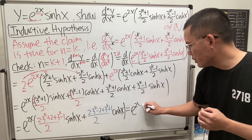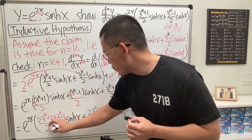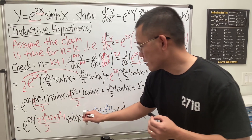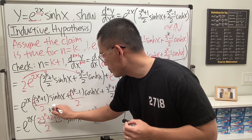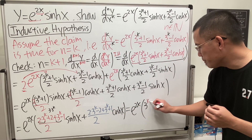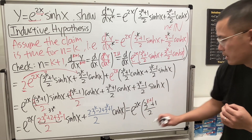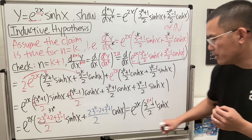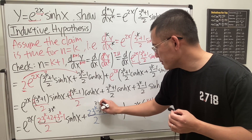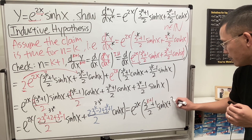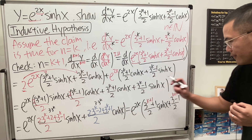Simplifying the sinh coefficient: 2 minus 1 is minus 1 in the exponent, and 2 times 3 to the k is 3 times 3 to the k which is 3 to the k+1, so together we get 3 to the (k+1)/2 plus 1 over 2 for the sinh part. Similarly for cosh: 3 times 3 to the k gives 3 to the k+1, and minus 2 plus 1 gives minus 1, yielding 3 to the (k+1)/2 minus 1 over 2 for the cosh part.